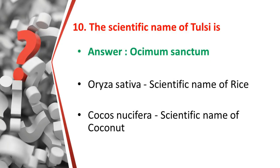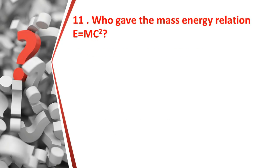The tenth question: what is the scientific name of Tulsi? The answer is Ocimum sanctum. Related facts: the scientific name of rice (Oryza sativa) and the scientific name of coconut is Cocos nucifera. So the scientific name of Tulsi is Ocimum sanctum.